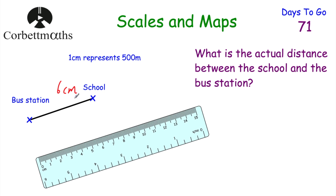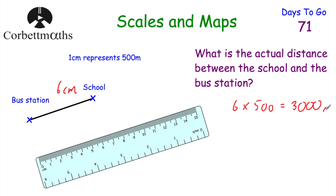On our diagram they're 6 centimetres apart, and we're told that 1 centimetre represents 500 metres. So every centimetre represents 500 metres. Because they're 6 centimetres apart, that's 6 lots of 500 — so we do 6 multiplied by 500. 6 times 500 is 3,000, so that's 3,000 metres. The bus station and the school are 3,000 metres apart. We could also convert this to kilometres: dividing by 1,000 gives us 3 kilometres. If you got that, well done.